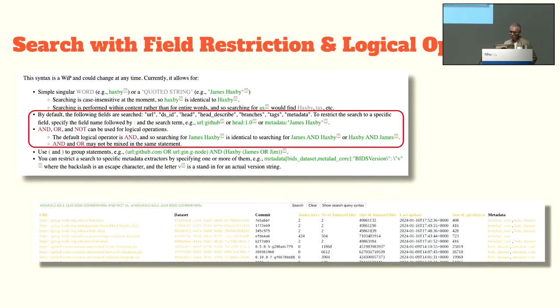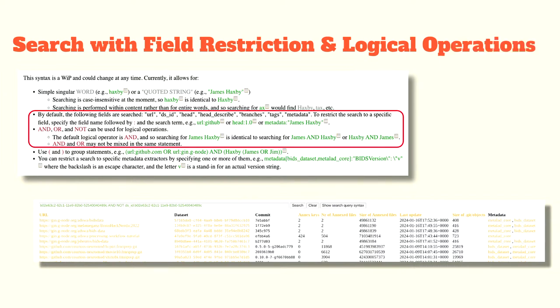The UUID in this particular example is the ID of the ReproLim container dataset. This query demonstrates finding all the datasets that reference the container dataset — a close approximation of finding all datasets that use the container dataset as a sub-dataset. Of course, this particular behavior is to be improved since it's just an approximation.